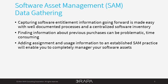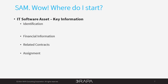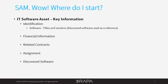Stay tuned for future videos on how to simplify the data gathering activities. The software asset information can be divided into five different categories: identification, financial information, related contracts, assignment, and discovered software. The software title and version is used to identify the software asset and to consistently record upgrade and downgrade paths, CPU, and other attributes that measure compliance. Using the titles and versions referenced in the licenses and contracts will make them easier to manage. Using the title and version information provided by discovery tools is more difficult and risky because of the overwhelming quantity of data that is often different than what is found on the license or on the contract.